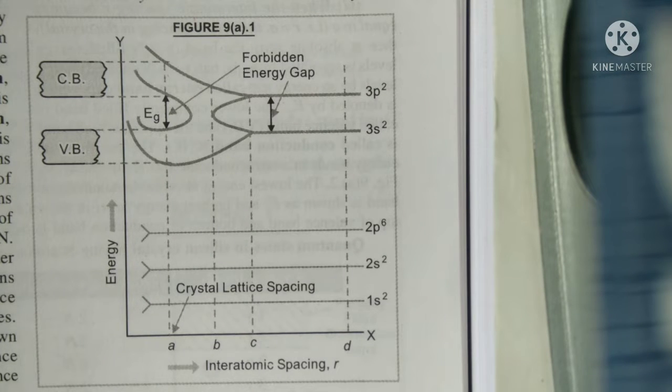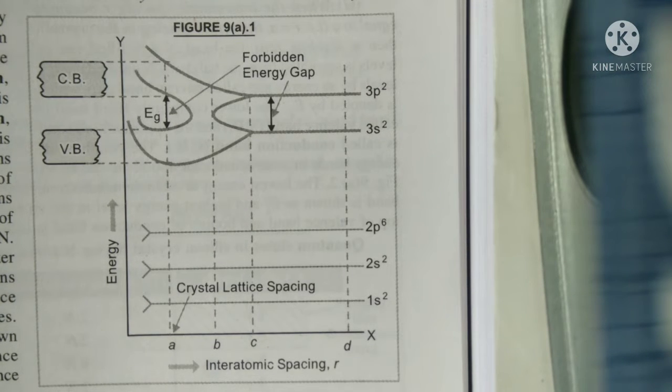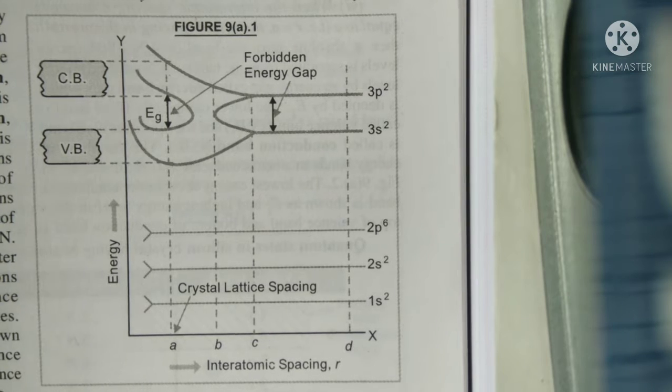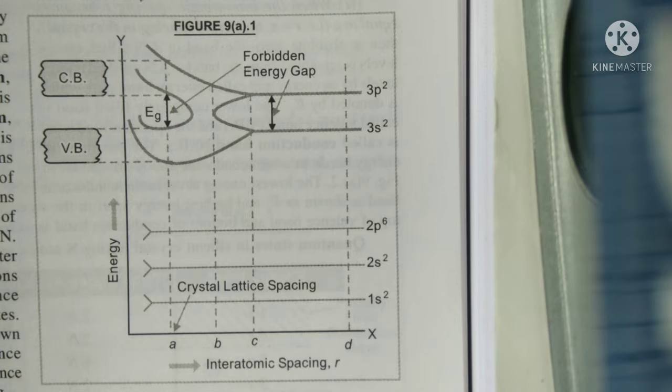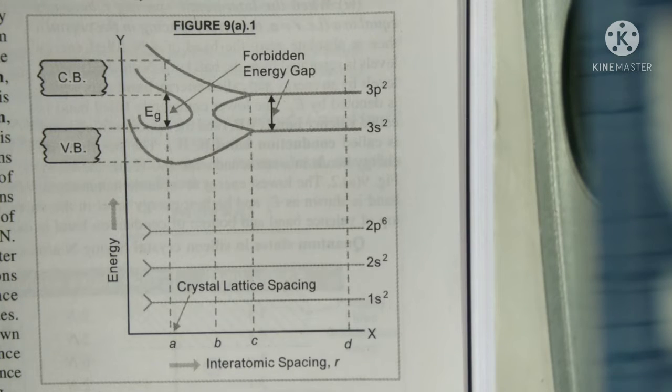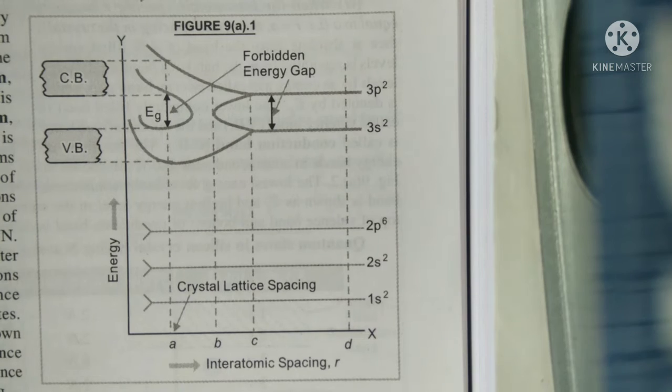So under steady silicon crystal, there are 2N electrons completely filling 2N possible 3s levels. And there are 6N possible 3p levels out of which only 2N levels are filled.